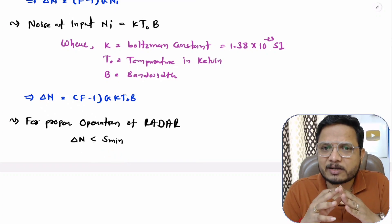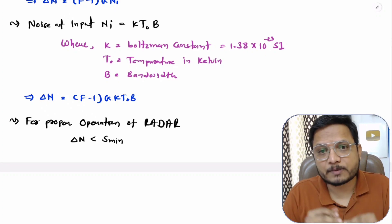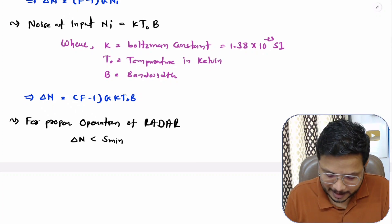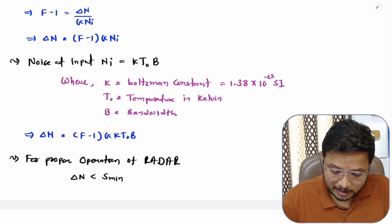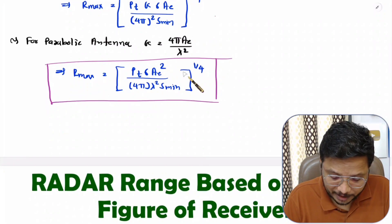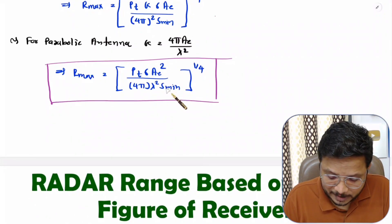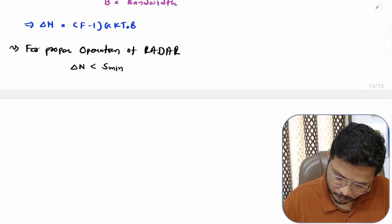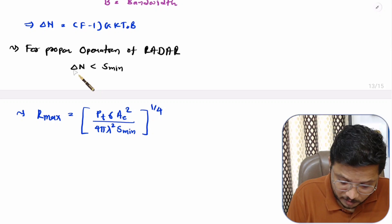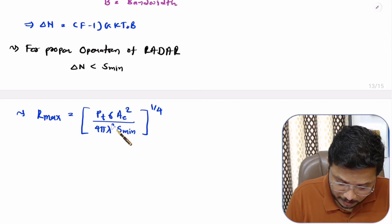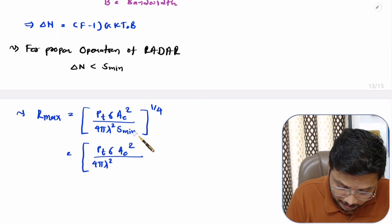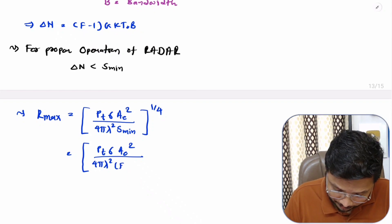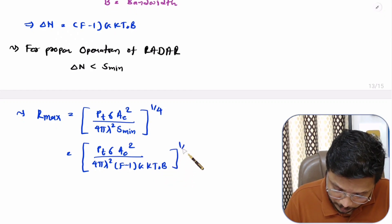When delta_n equals S_min that is the threshold of reception where you will have maximum range. So I'll substitute delta_n in place of S_min in the radar range equation derived in my last video. In the equation, S_min is replaced by (F − 1) × G × k × T0 × B, raised to the power 1/4.